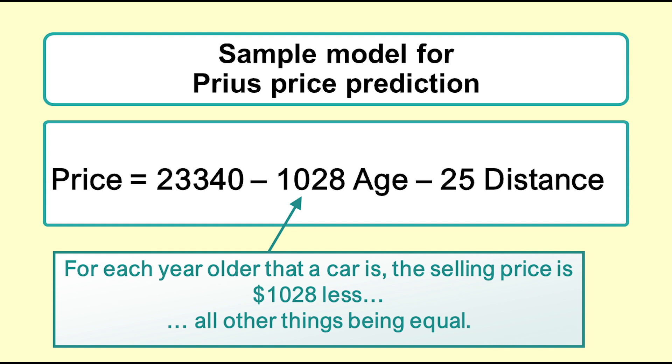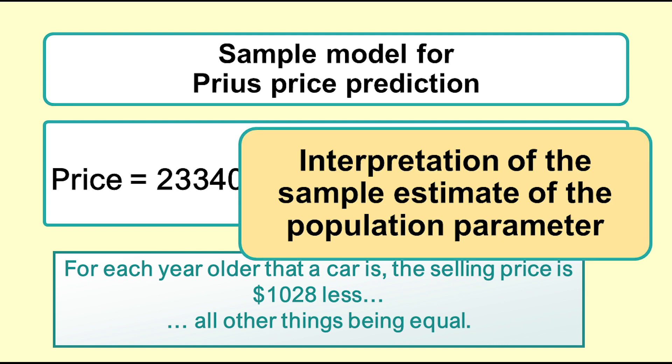tells us that for each year older that a car is, the selling price is $1,028 less, all other things being equal. That is the interpretation for the sample estimate of the coefficient. It is the best estimate of the slope for that sample.